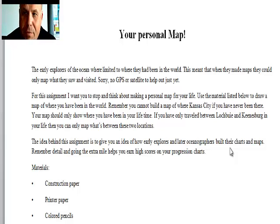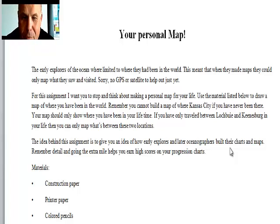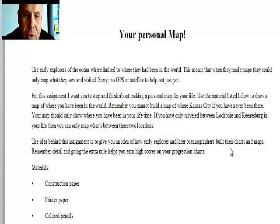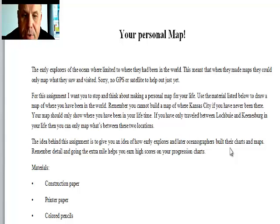Now an example of this: if you've never been to Rhode Island, you won't include Rhode Island on your map. If you've never left Keensburg, then your map should be pretty much just of Keensburg. For this, some of the materials you'll have are construction paper, white printer paper — you can use that as well — colored pencils, ruler tape, and a protractor.